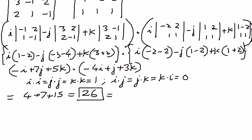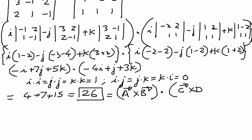So the value is 26. This is the result of vector a cross vector b, dot product with vector c cross vector d. This is the left-hand side of the expression. Now we will take the right-hand side and see if we can arrive at the same answer.